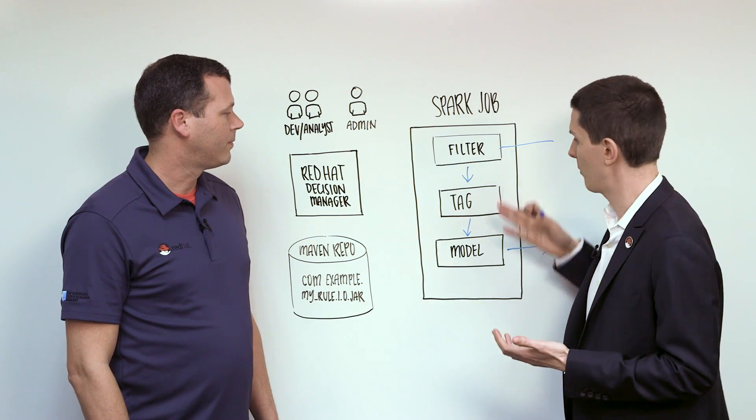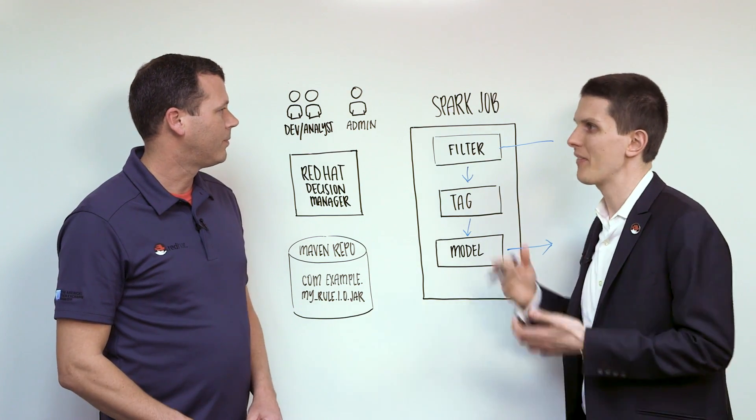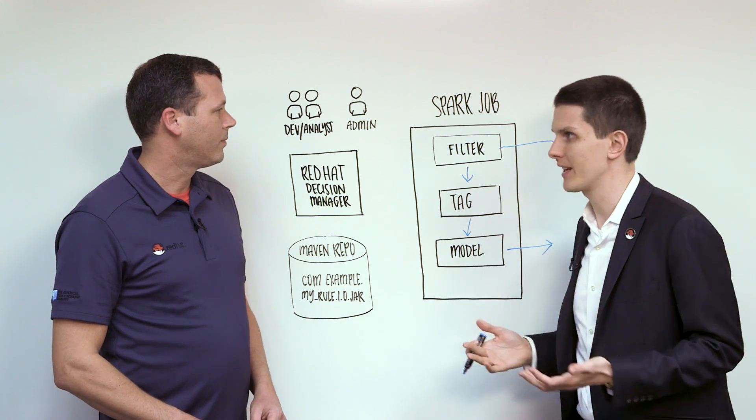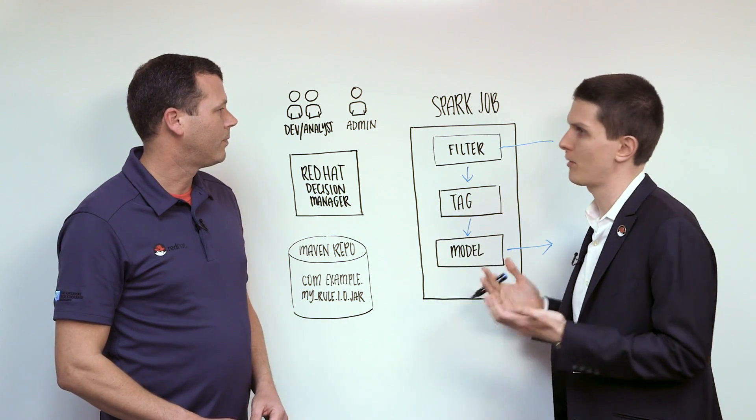And this is great, except for whenever we want to update this smart logic here for the tagging, we have to update Java code and go through an entire dev cycle. It's a pain. So how can we improve this process?